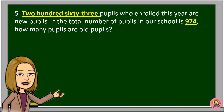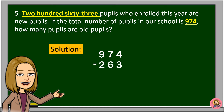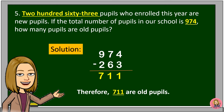263 pupils who enrolled this year are new pupils. If the total number of pupils in our school is 974, how many pupils are old pupils? We will subtract 263 from 974. 4 minus 3 is equal to 1. 7 minus 6 is equal to 1. 9 minus 2 is equal to 7. Therefore, 711 are old pupils.